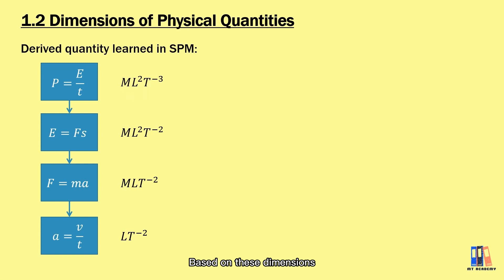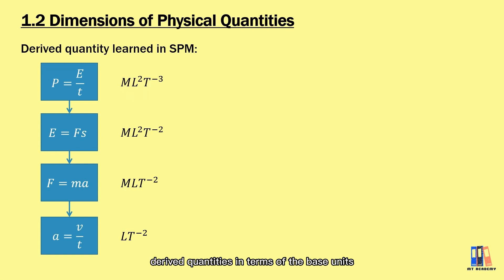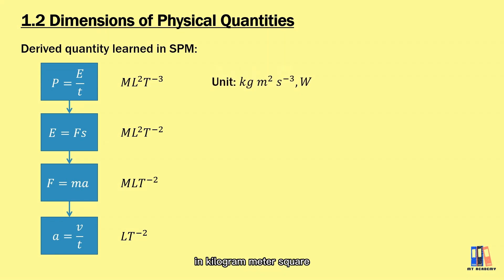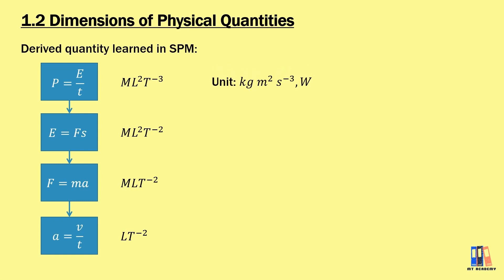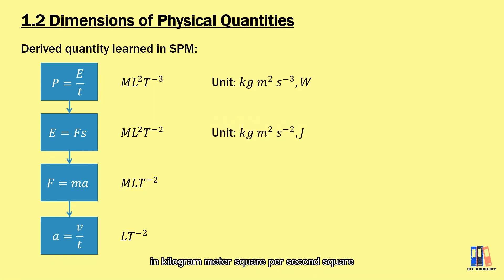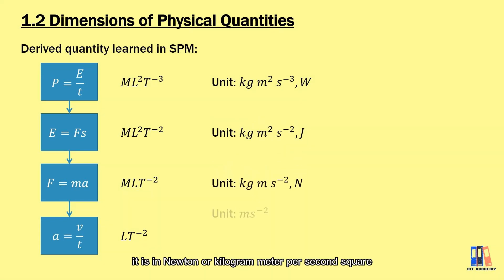Based on these dimensions, we can identify the units of derived quantities in terms of base units. Power is measured in watts, but also in kilogram meter squared per second cubed. Energy is in joules, or kilogram meter squared per second squared. Force is in newtons, or kilogram meter per second squared.